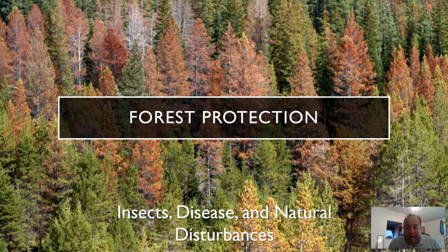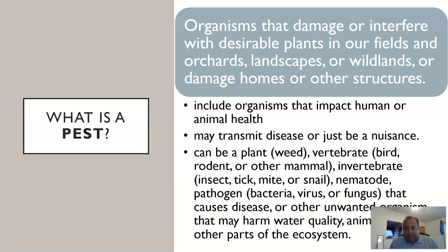We'll be talking about forest protection today, or forest pests, or you could say insects, disease, and natural disturbances that affect the forest. All of those different titles would work for what we're going to talk about today. A pest is defined as an organism that damages or interferes with desirable plants in our fields, orchards, landscapes, and wild lands, or damages homes or structures, impacts human or animal health, transmits disease, or is just a nuisance.